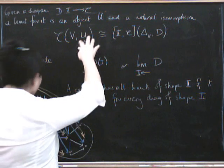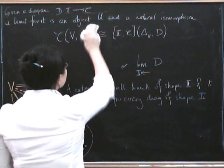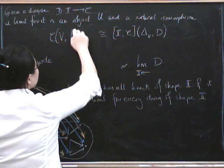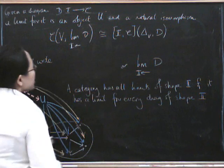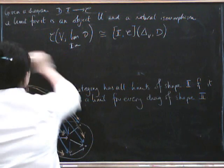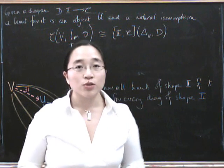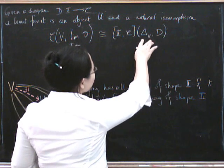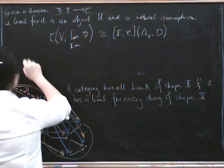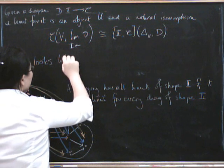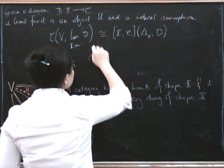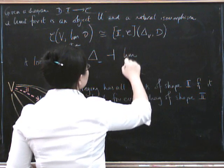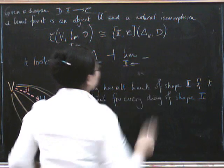If the category does have all limits of shape I, something rather nice happens. If I fill in this object — instead of writing U, I write 'lim with a backward arrow of D' — this formula might remind you of the definition of an adjunction. If you think of this as something of D and this as something of V, it looks an awful lot like we've got delta-blank (where you fill in V) being left adjoint to the limit functor (where you fill in D).